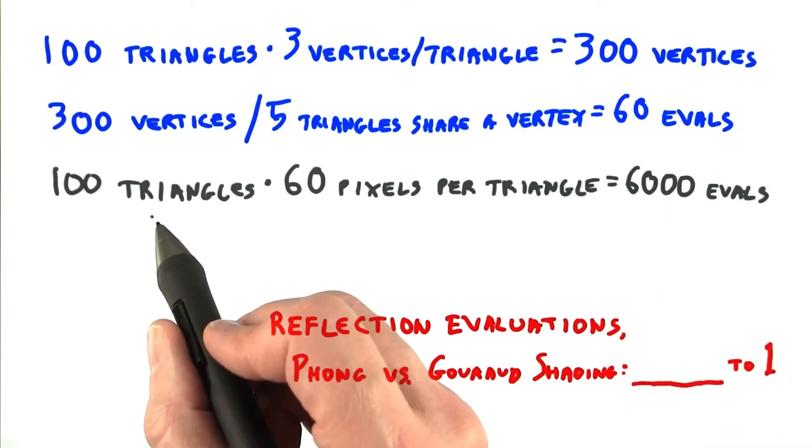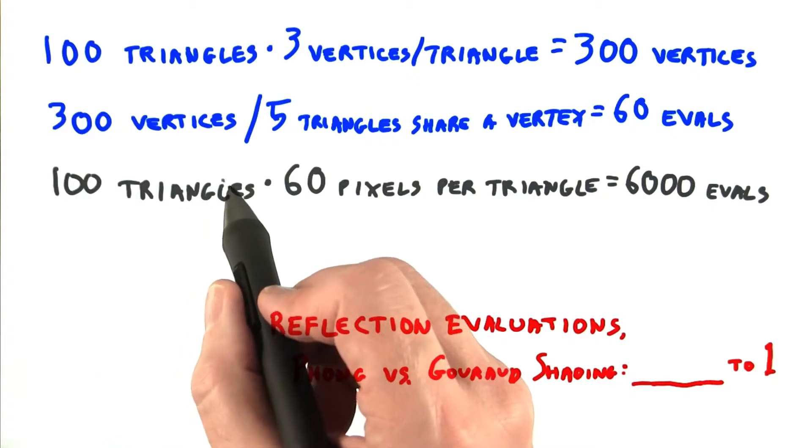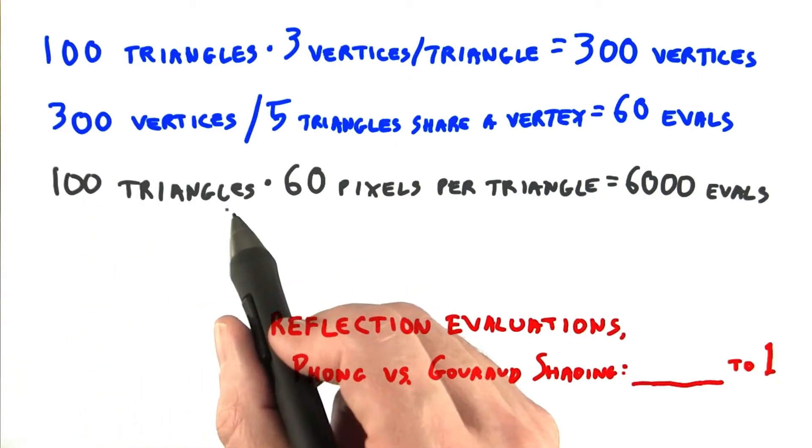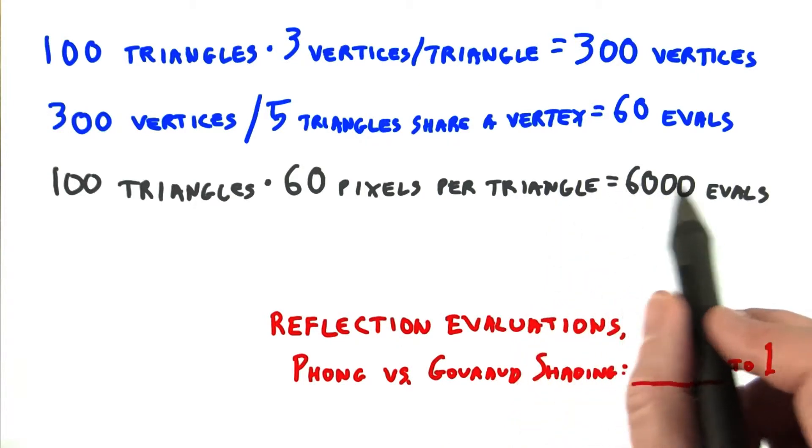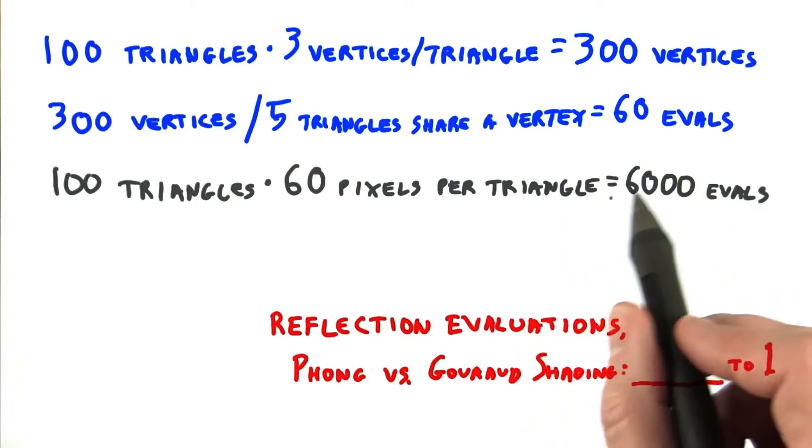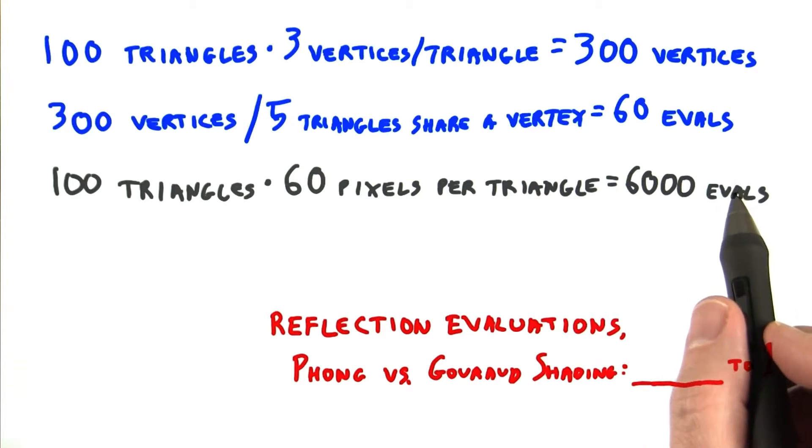For the fragment shader, where we're shading per pixel, there's no sharing. So 100 triangles times 60 pixels per triangle gives 6,000 evals. In other words, 6,000 material calculations we need to do.